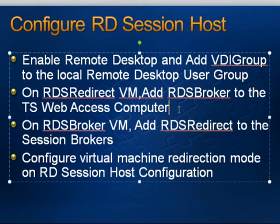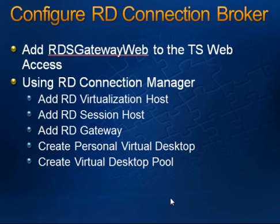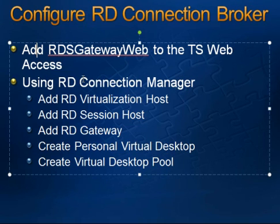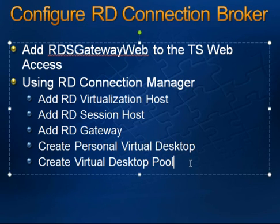The second and third settings are what you're going to configure on Computer Management. Lastly, you're going to use the RD Session Host Configuration to set the RD Session Host as redirect mode. Then on the RD Connection Broker in Computer Management, you need to add the RDS gateway to allow it. You're going to use RD Connection Broker to configure the RD Virtualization Host, RD Session Host, and RD Gateways, and use the broker to create the personal virtual desktop (static) and the virtual desktop pool (dynamic).